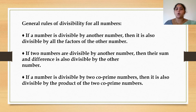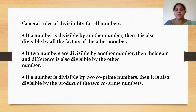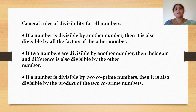For example, take two co-prime numbers 3 and 5. When you multiply 3 and 5, the product is 15. So when two co-prime numbers are multiplied, the product is also a divisor of the given number.